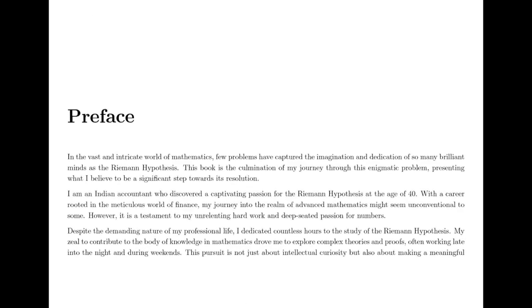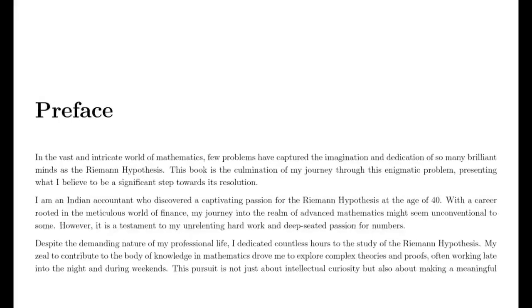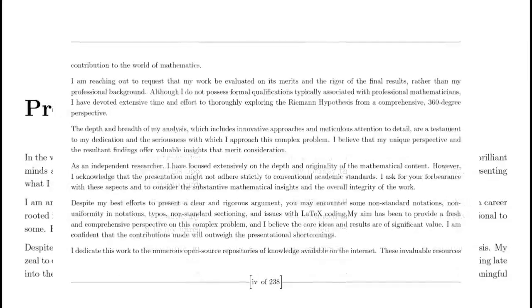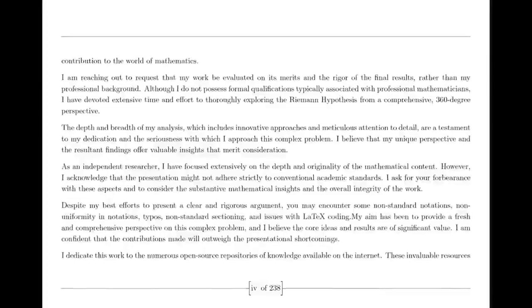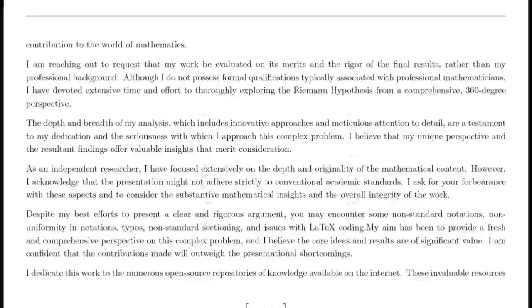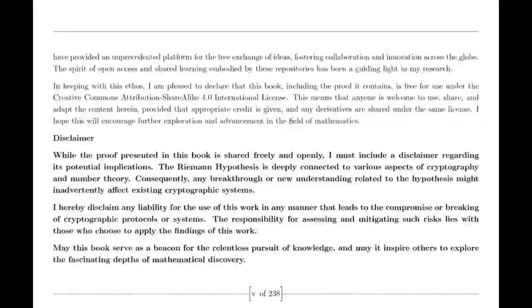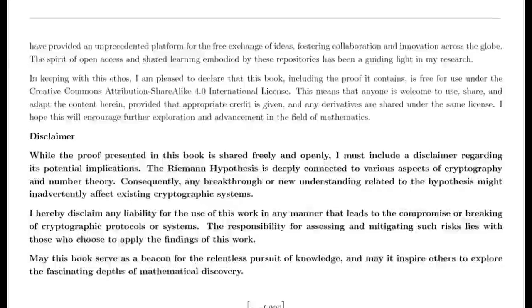We begin with the remarkable contributions of Leonard Euler. In the 18th century, Euler made groundbreaking discoveries in understanding infinite series. He introduced the idea that the harmonic series — the sum of the reciprocals of the positive integers — could be expressed as a product over prime numbers. This revolutionary insight linked the harmonic series to the complex and profound properties of prime numbers. Euler's formula was one of the first indications of the deep connections between primes and series.